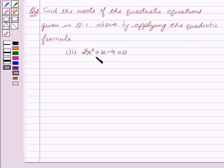Our given equation is 2x² + x - 4 = 0. Now let's start with the solution.